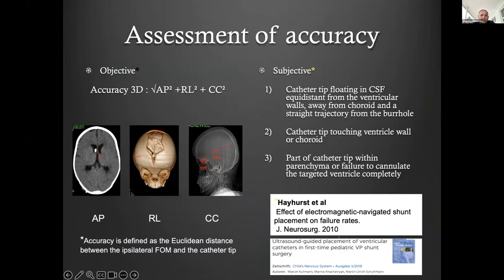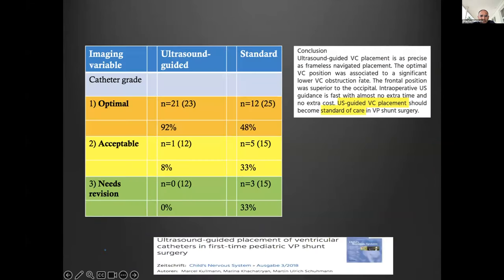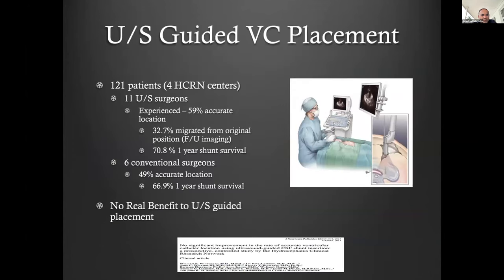We did a correlation study comparing ultrasound measurements with CT scans and found a pretty good correlation. We used criteria described by Hayhurst, similar to a study done by the group in Tübingen, which came up with fairly strong recommendations — concluding that ultrasound-guided ventricular catheter placement should become standard of care in VP shunt surgery, though this depends on the level of expertise and the type of machine and experience you have.